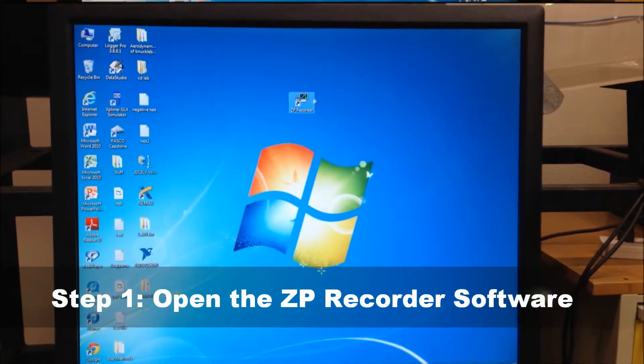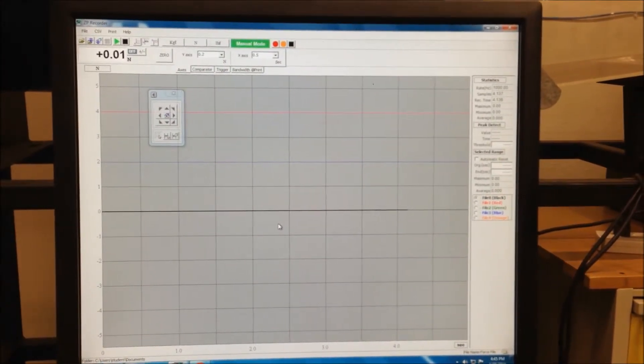The first step in the procedure is to open the ZP Recorder software. This is what the software looks like when it is ready to use.